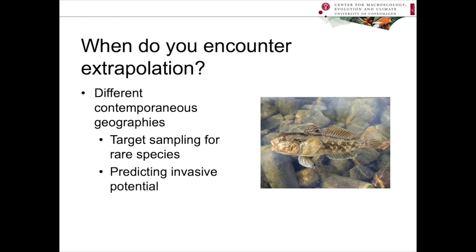So when do you encounter extrapolation? You've probably seen various applications for niche models to predict what's going to happen under different conditions. You might have different contemporaneous geographies — for example, you might train a model for round goby in its native range, and then use that model to predict where else that species might be able to invade, by projecting that model into North America. This is a well-known invasive species in North America, but you might want to identify its invasive potential. Another example would be to train a model for a rare species and then project it into additional habitats to do target sampling.